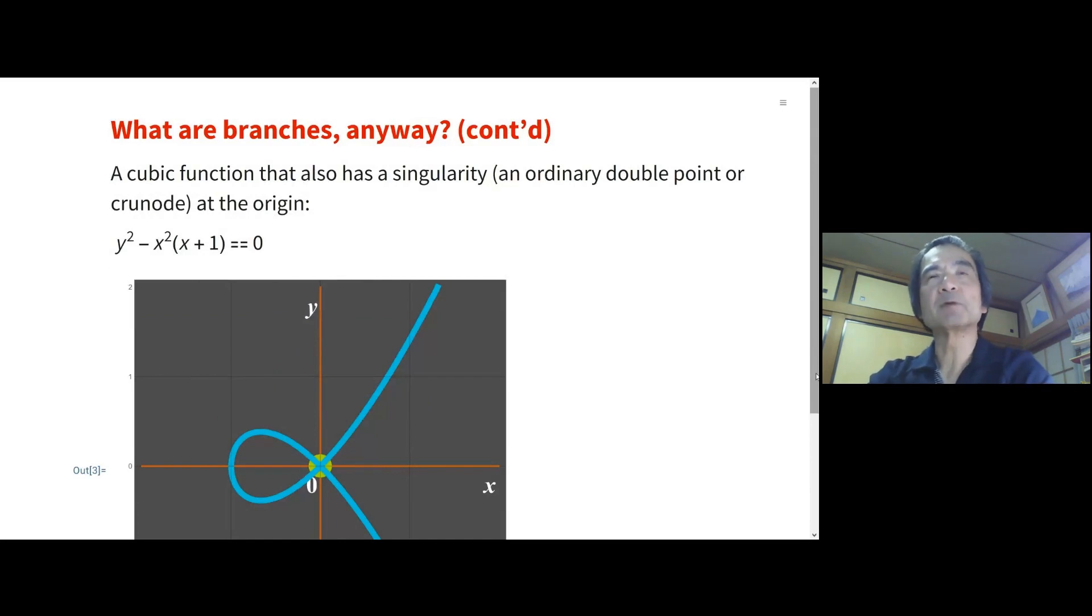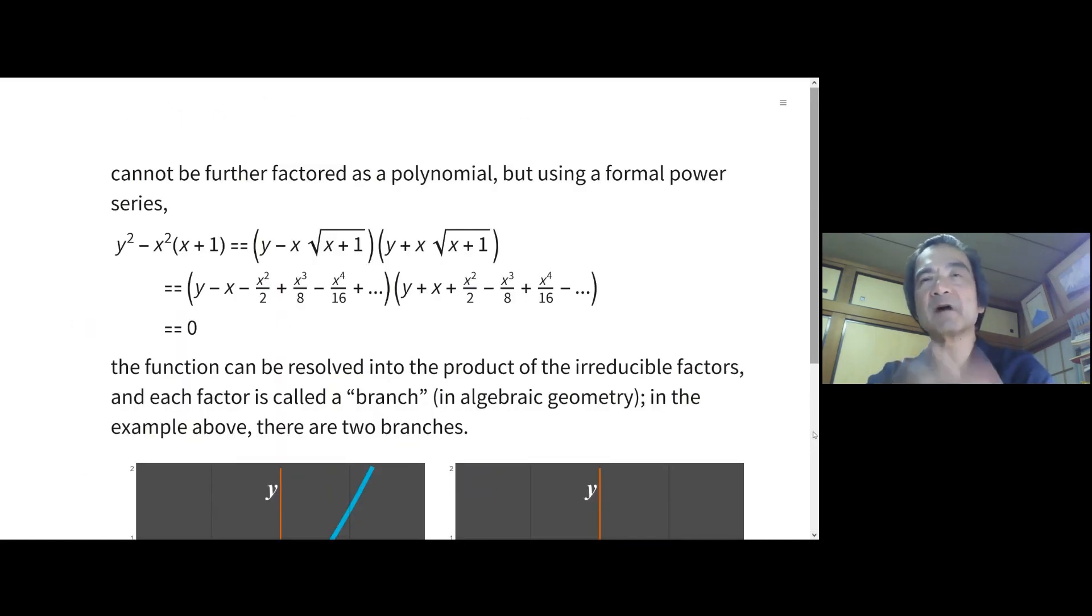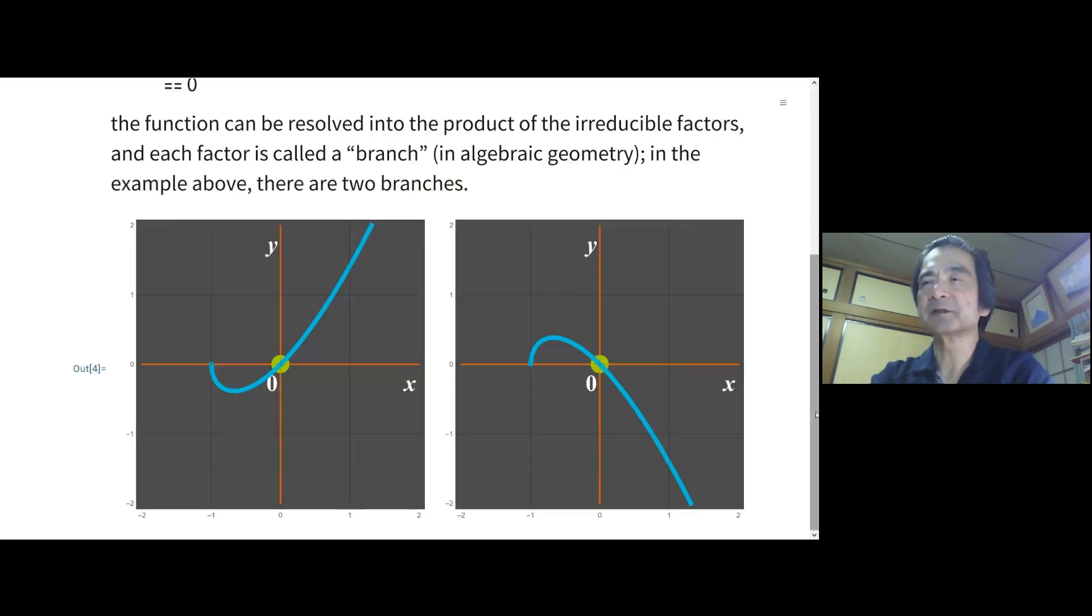Another example is a cubic function that also has a singularity at the origin - the ordinary double point or a cusp node at the origin. This equation produces a graph like this. This cannot be further factored as a polynomial, but using a formal power series, we can factor that. The function can be resolved into the product of irreducible factors. And each factor is called a branch, in the sense of algebraic geometry. In the example above, there are two branches in this example.